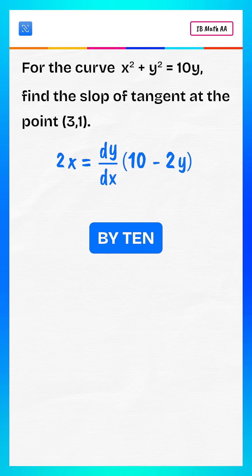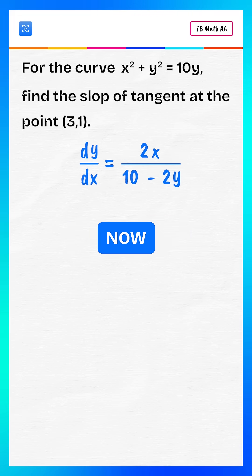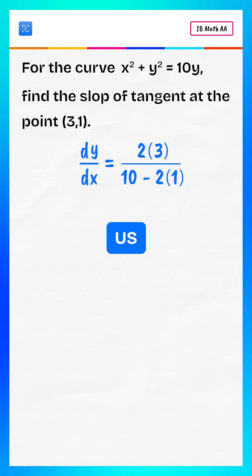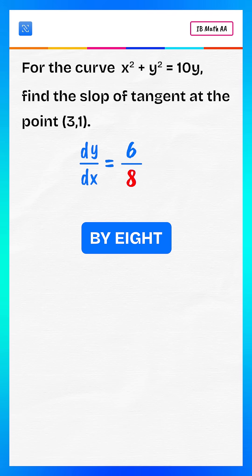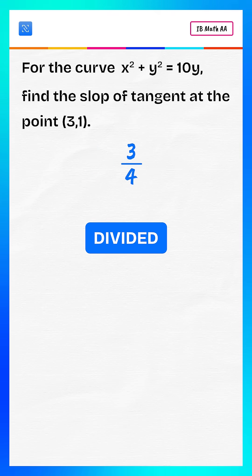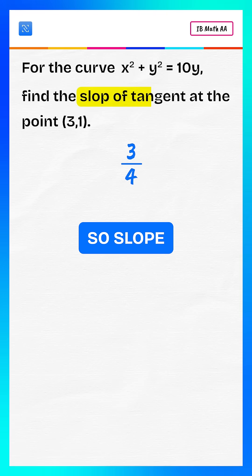Now divide both sides by (10 minus 2y). Substitute the point (3,1), which gives us dy/dx equals 6 divided by 8, which equals 3 divided by 4. So the slope of the tangent at (3,1) is 3/4.